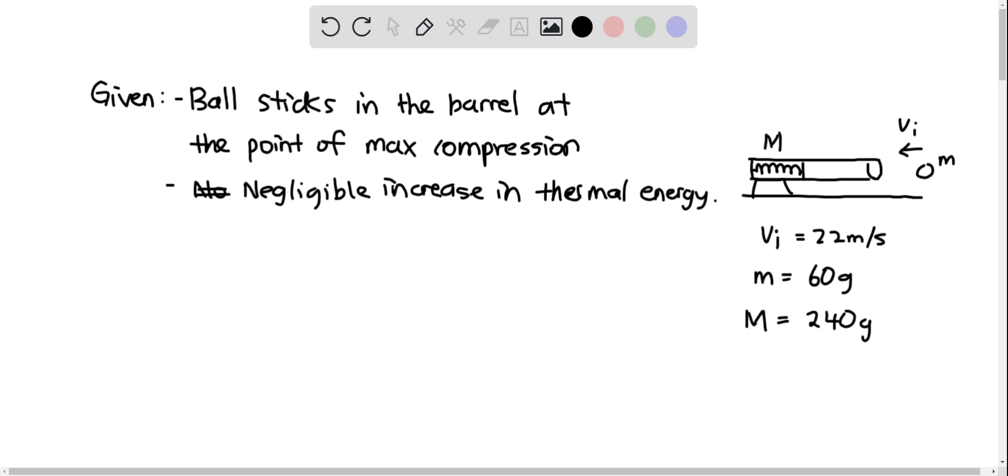In this question, we have a ball of 60 grams shot with a speed of 22 meters per second into the barrel of a spring gun. The ball sticks in the barrel at the point of maximum compression.